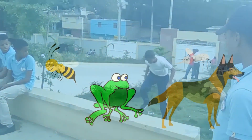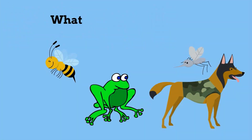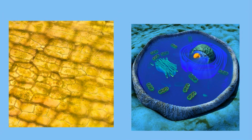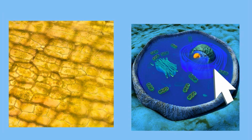What do all of these animals have in common? First, they are all multicellular organisms made from eukaryotic cells. In other words, each cell has a nucleus and a membrane, and membrane-bound organelles.